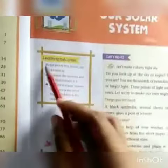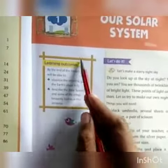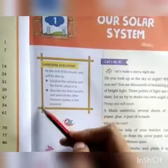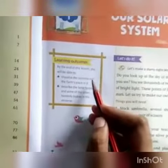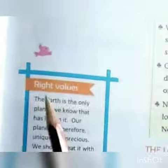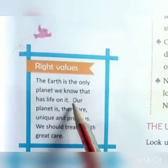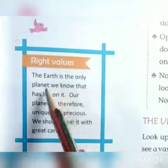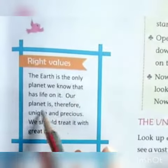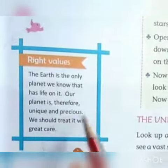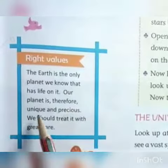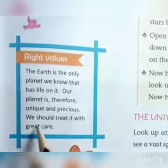Here is a starry night sky — this is your assignment, we will do it later. Here are the learning outcomes; we can search about them after the lesson. The right values: the Earth is the only planet we know that has life on it. Our planet is therefore unique and precious.